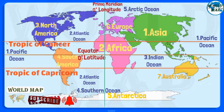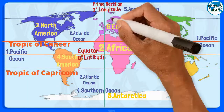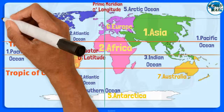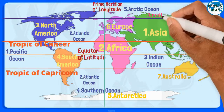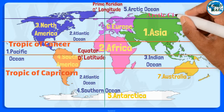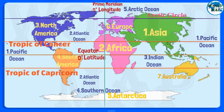The Arctic Circle is an imaginary line that encircles the Earth at a latitude of 66 degrees 33 minutes north. It is one of the two polar circles and one of the five major circles of latitude.